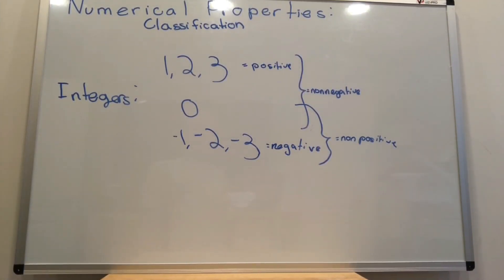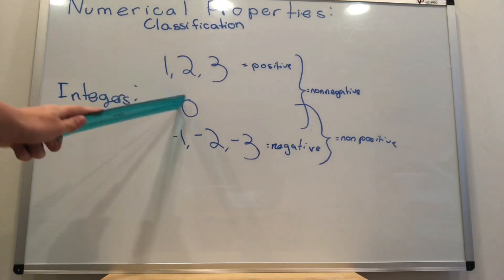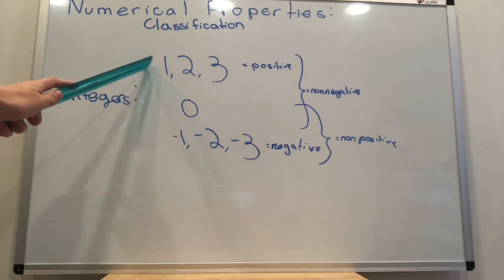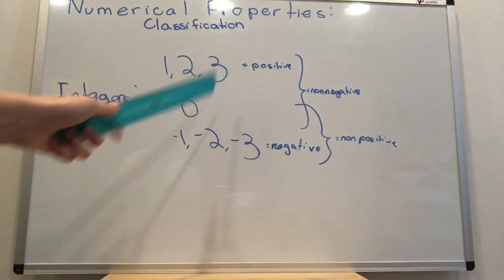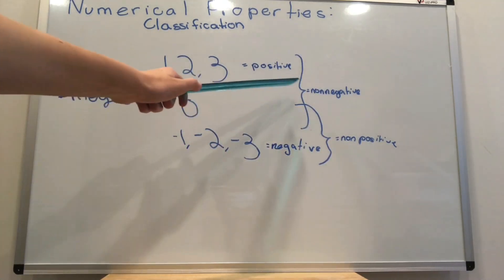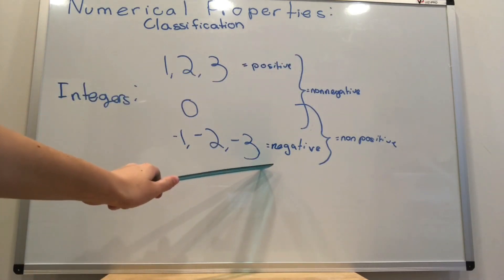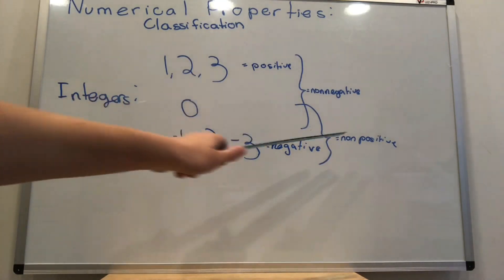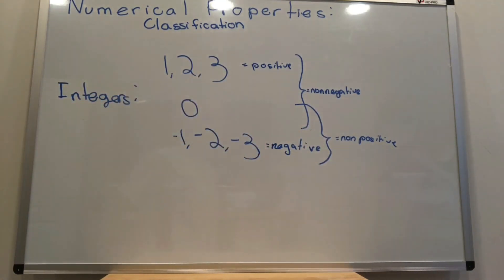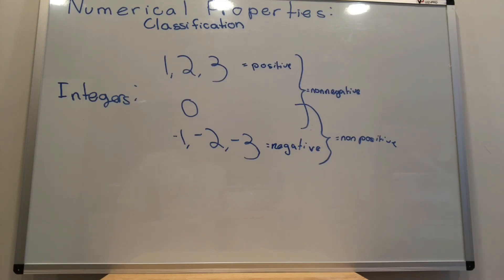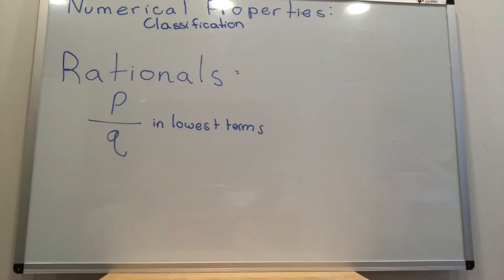If I tell you to name a positive integer, you cannot name 0. As we know, 1, 2, 3, etc. are the positive integers. However, if I told you to name a non-negative integer, you could name 0. Same goes for negative integers — if I said name a negative integer, you can't name 0. But if I said name a non-positive integer, you can. So asking you to prove something for all non-negative numbers means you do have to prove it for 0 as well, whereas saying you have to prove something for all positive numbers means you don't have to prove it for 0.